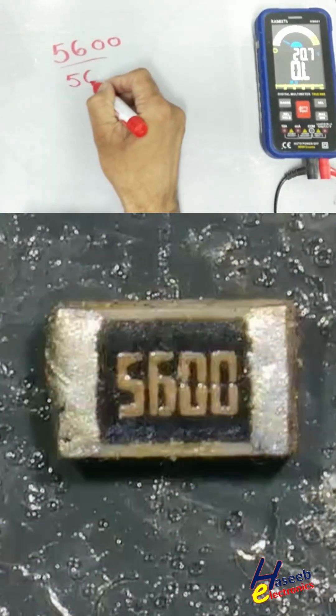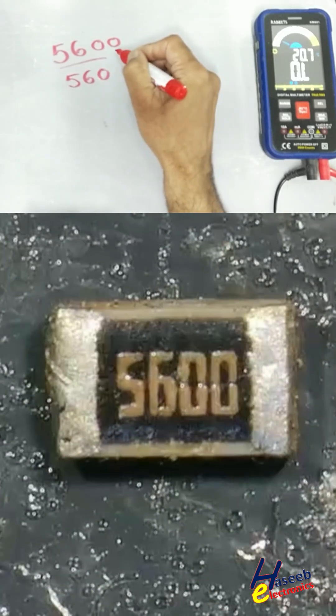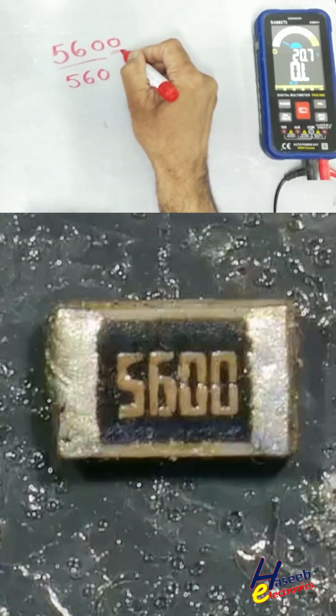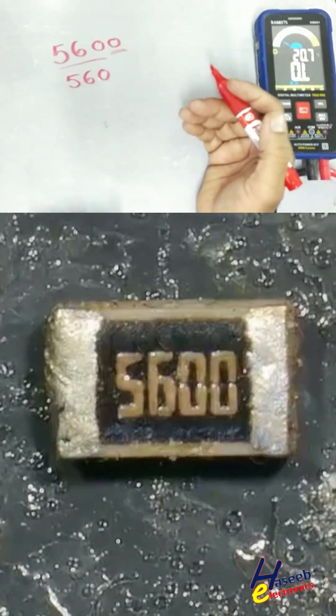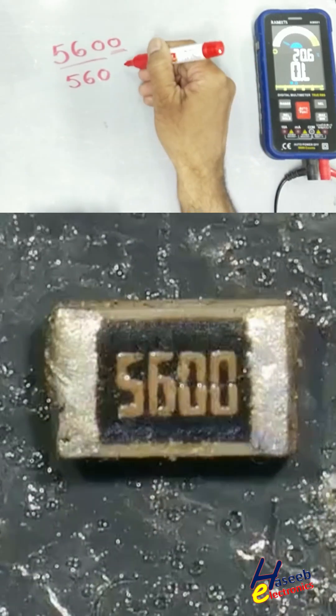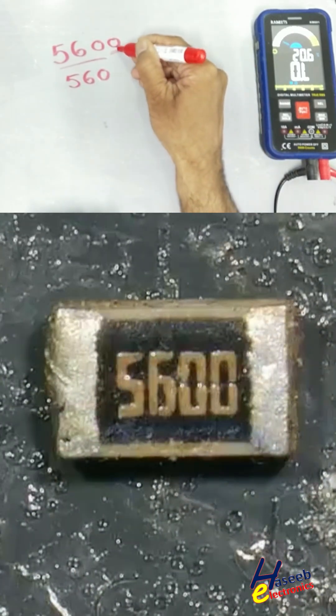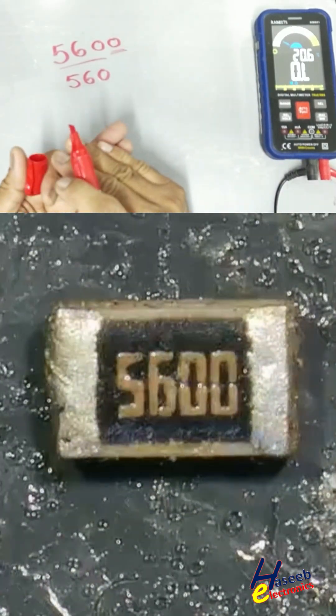5, 6, 0. And this number will indicate the number of zeros, how many zeros will be added here. This time 0, that means there will be no zero.